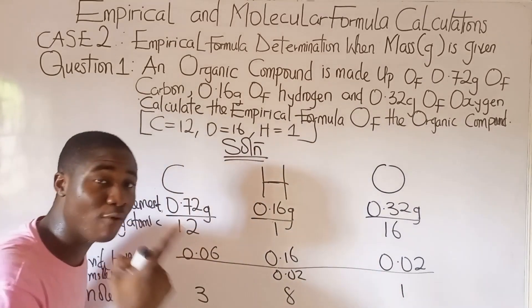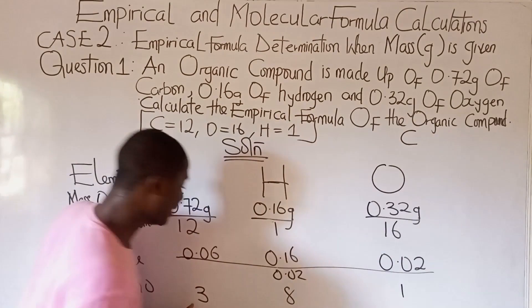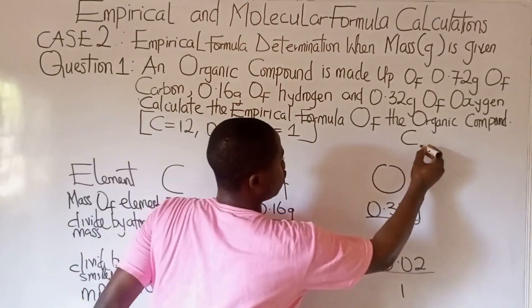Whereby our chemical formula of the organic compound becomes, for carbon, we had 3 as the mole ratio. So here it becomes 3.